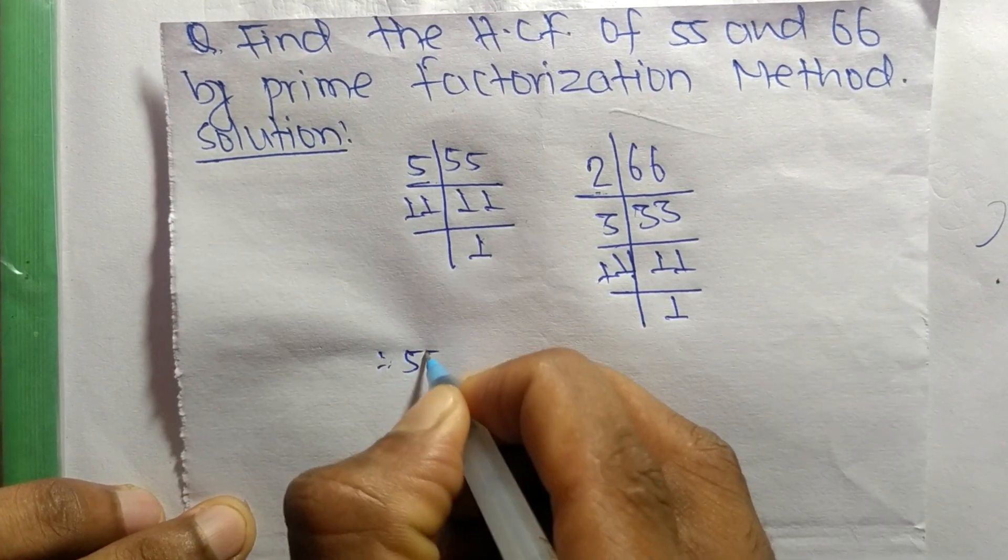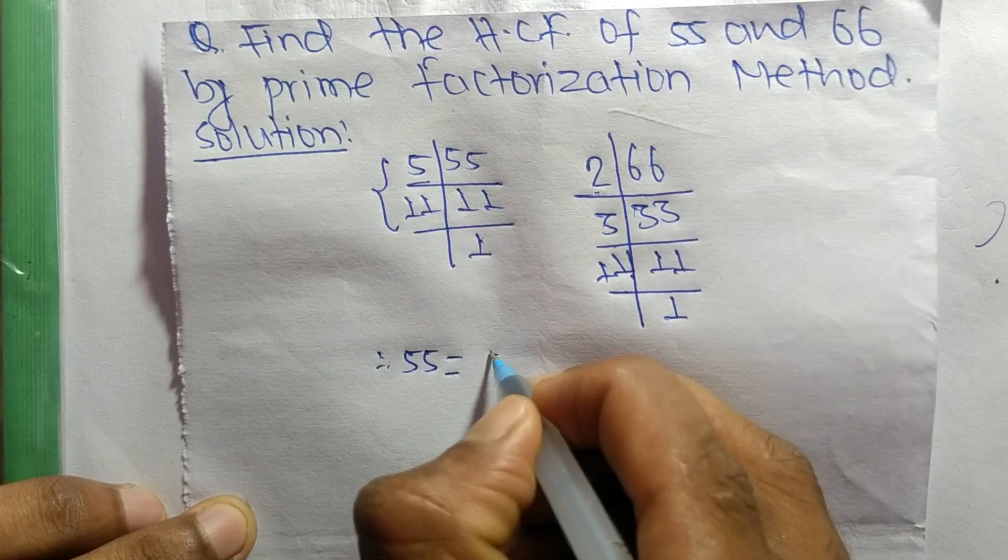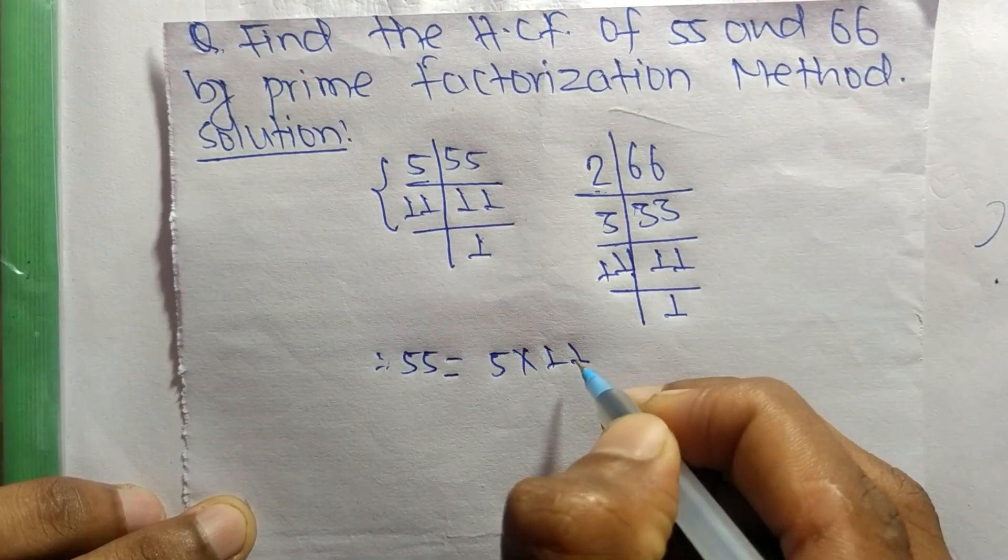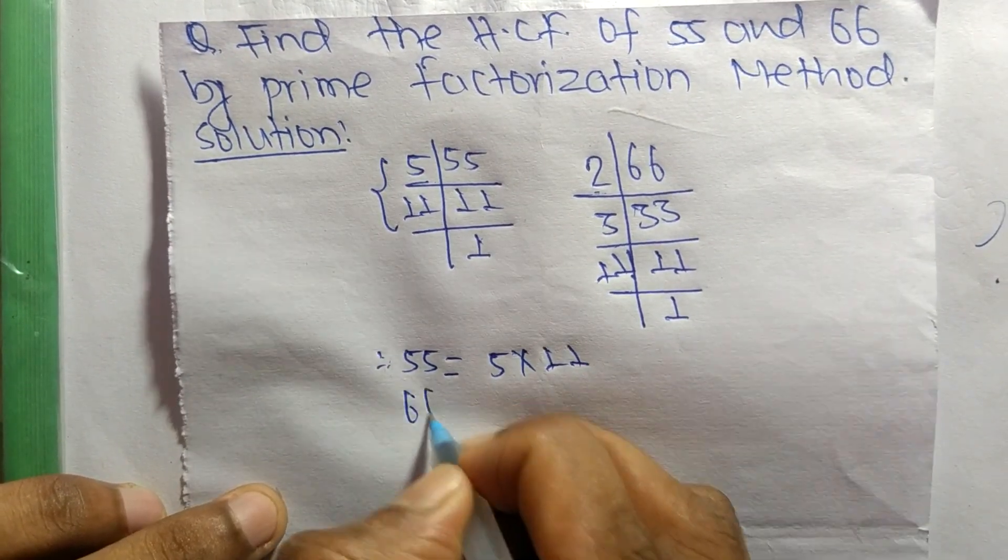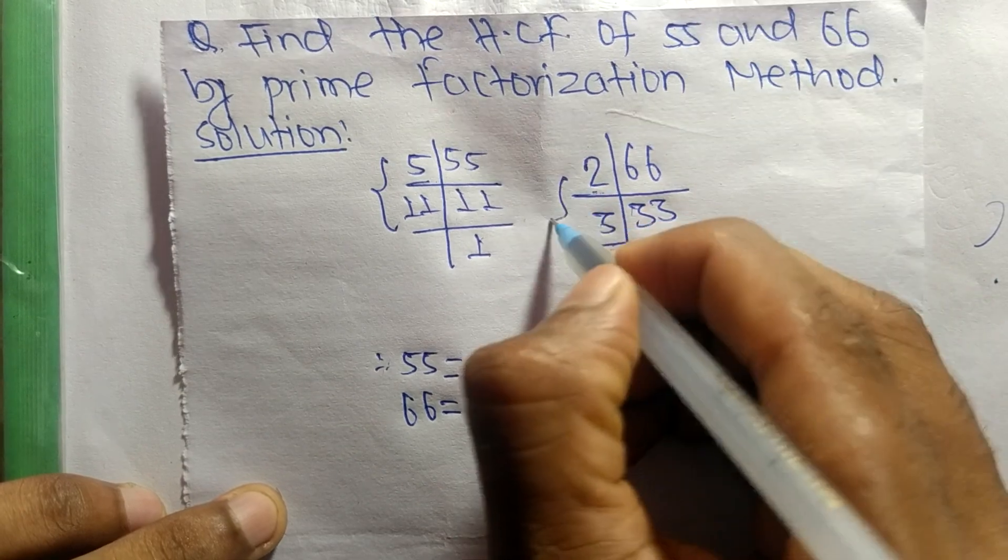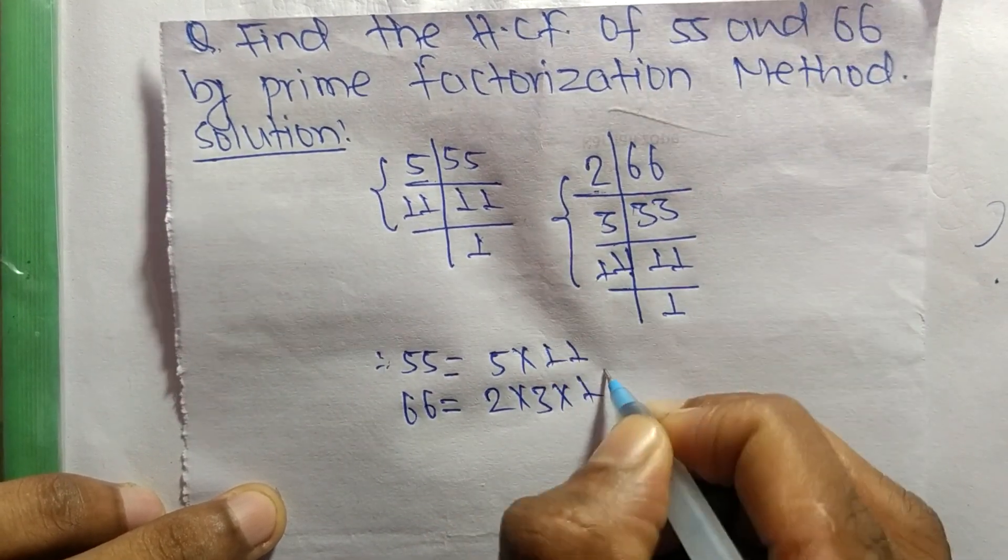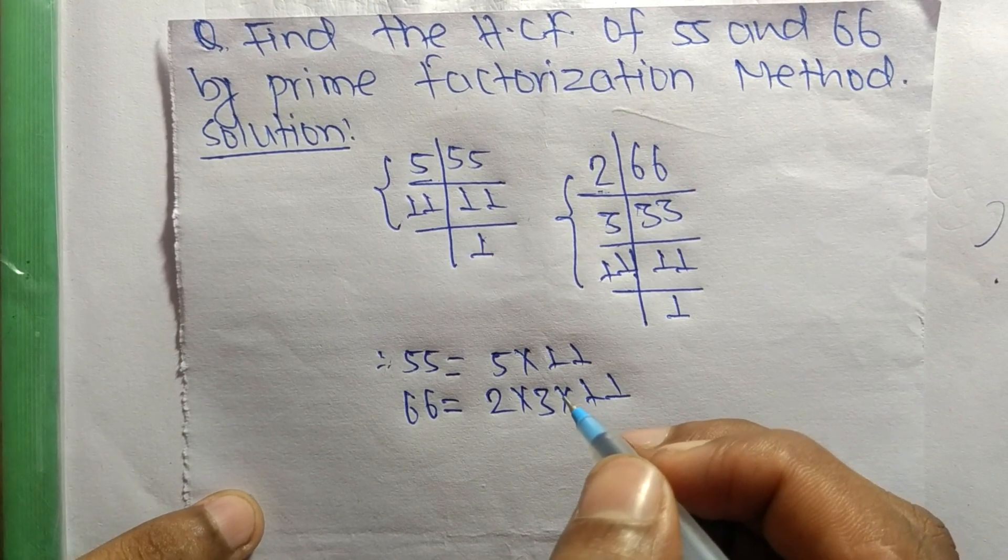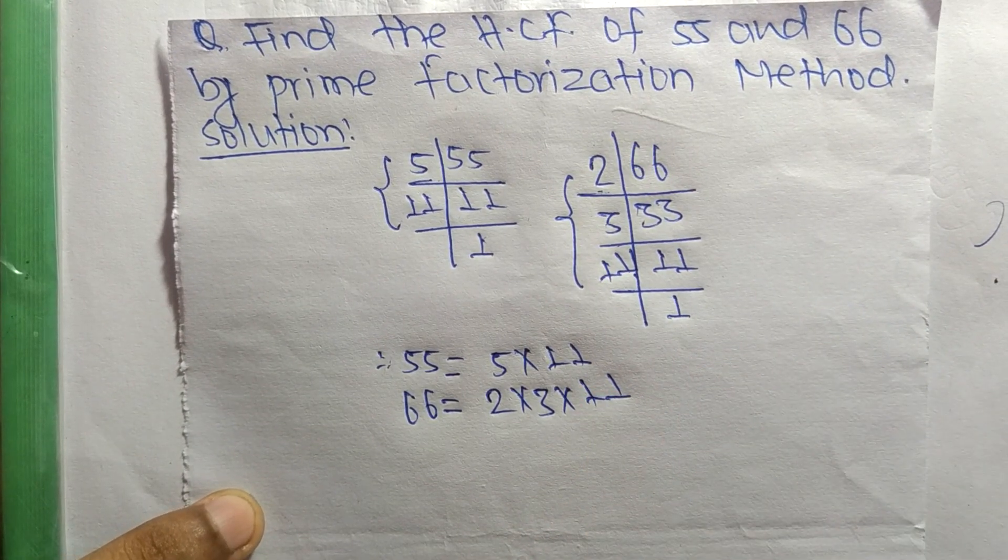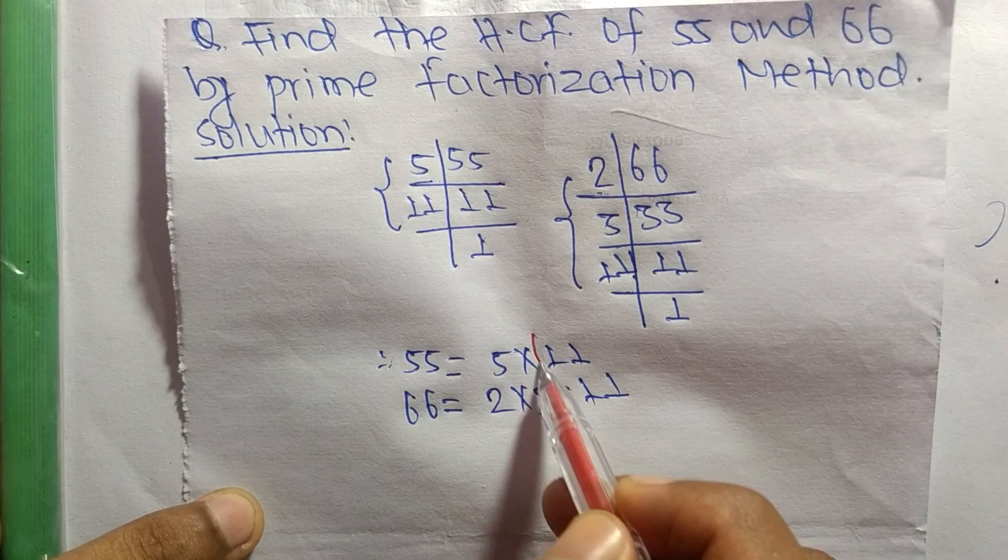55 is equal to 5 times 11. Likewise, 66 is equal to 2 times 3 times 11. So now we select the common factors in these prime factorizations, and the common factor here is 11.